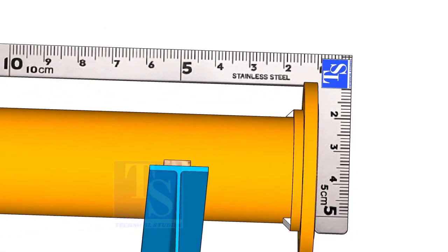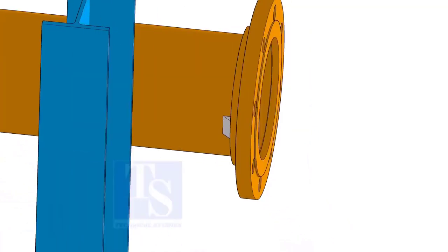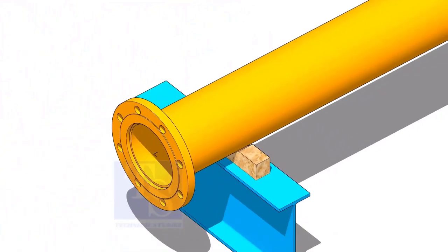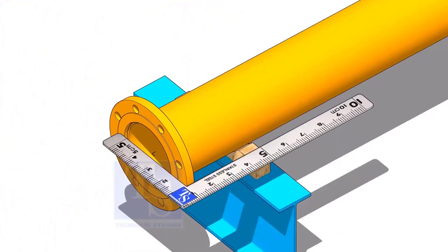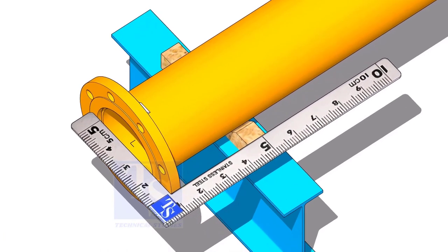Tack weld at the bottom side. Square the flange face horizontally to the side of the pipe.